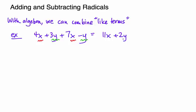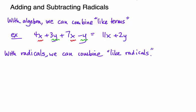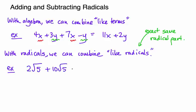Similarly with radicals we can combine what we call like radicals. Like radicals are when we have the exact same radical part. For instance if we have 2 root 5's and another 10 root 5's, these are exactly the same radical part, so we get a combined total of 2 plus 10 which is 12, and that stays the same root 5.